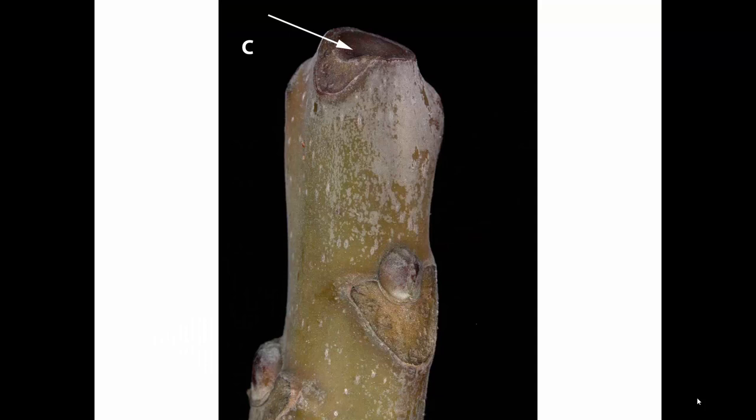This big fat twig with the huge shield-shaped leaf scars is Tree of Heaven. Tree of Heaven has a false terminal bud — the bud nearest the tip is just another lateral bud. At the end of the growing season the twig dies back, leaving a scar called a tip scar, and that's what C is pointing to.